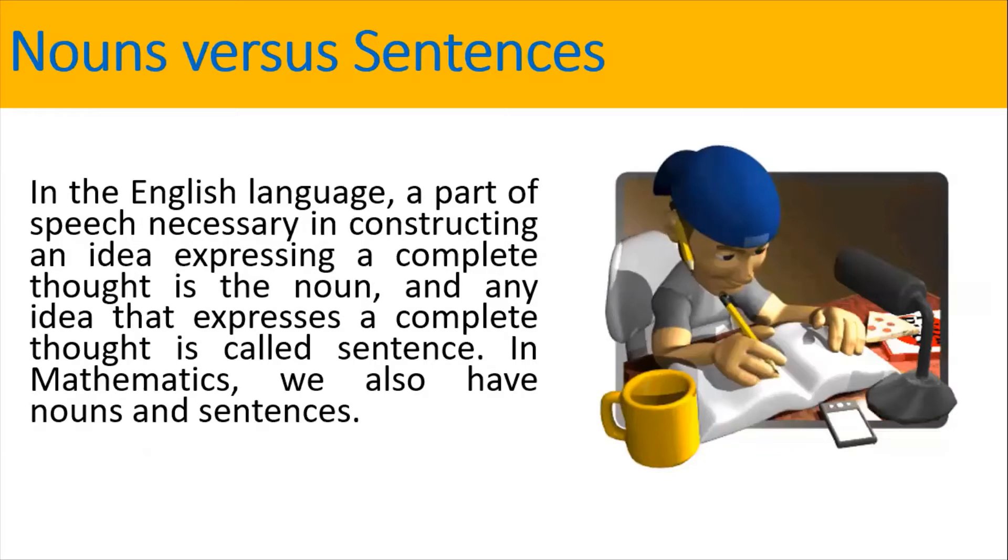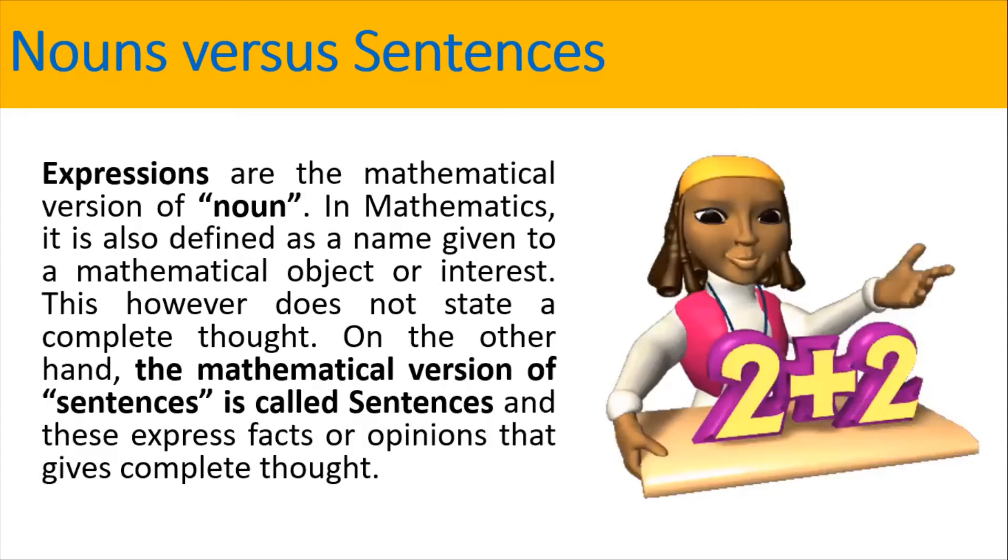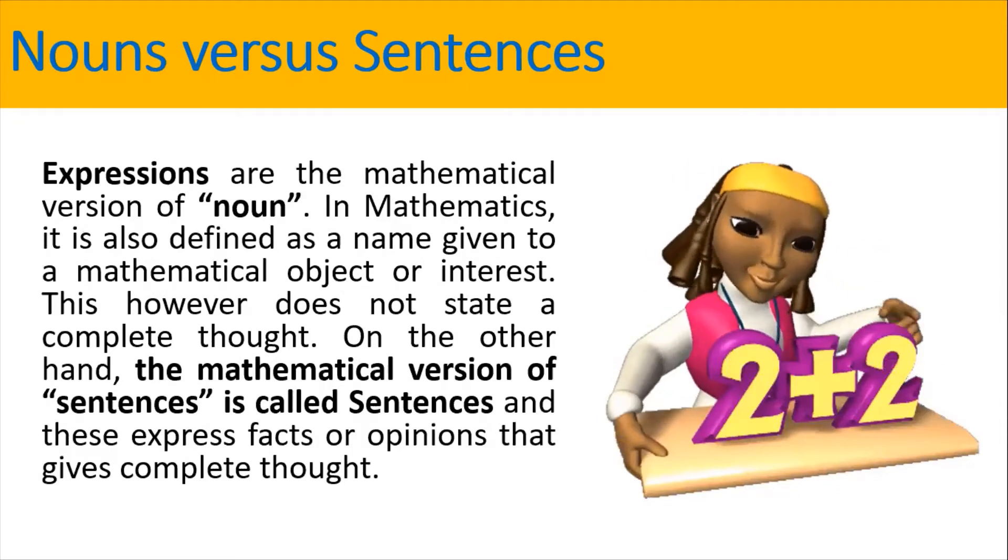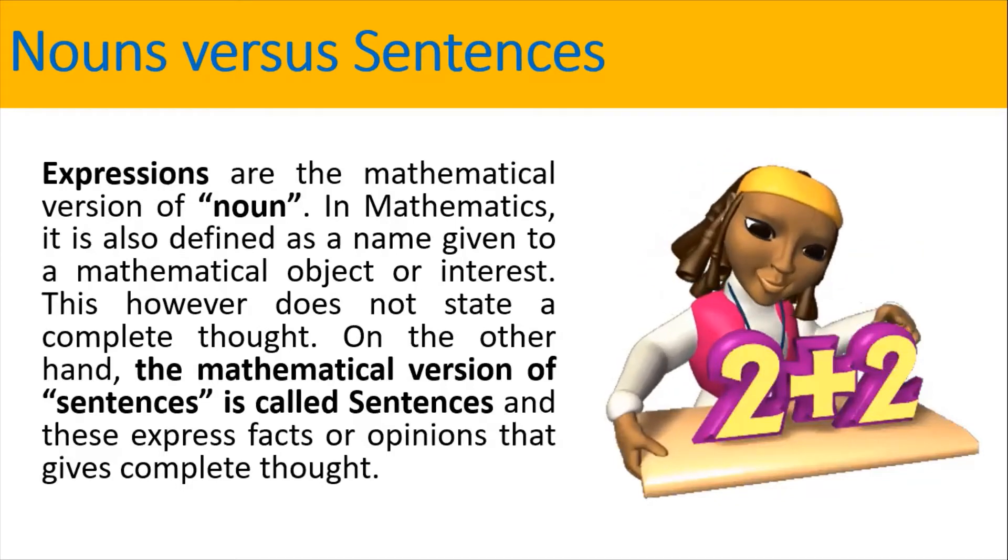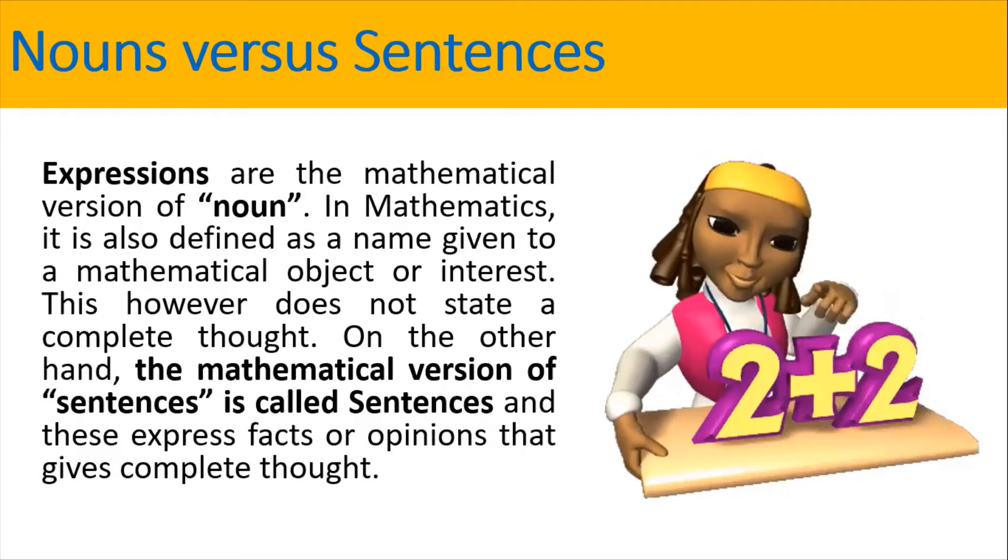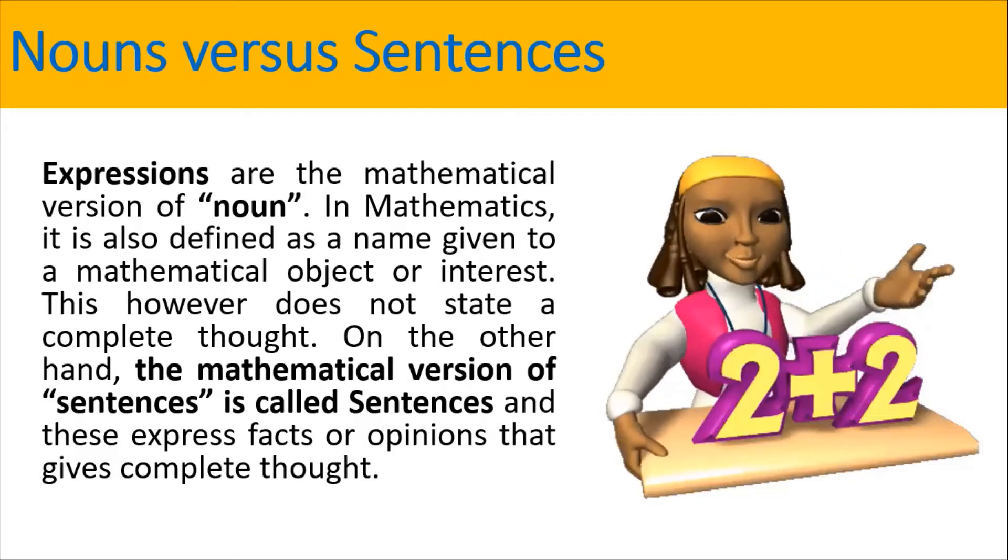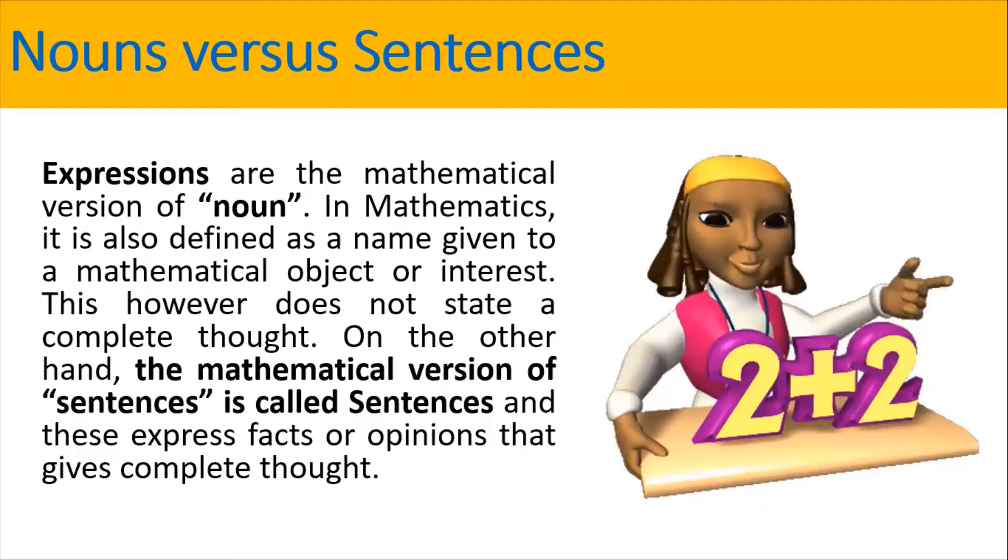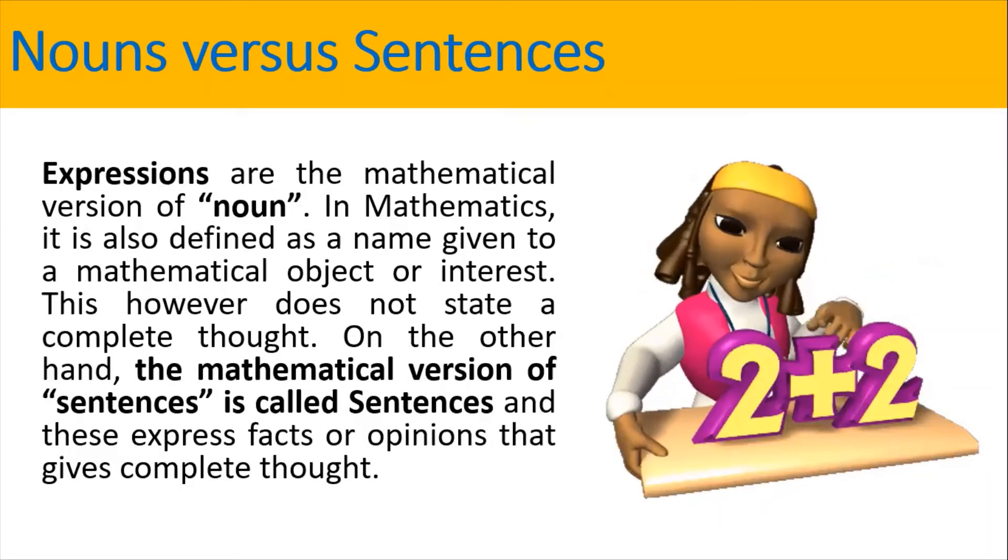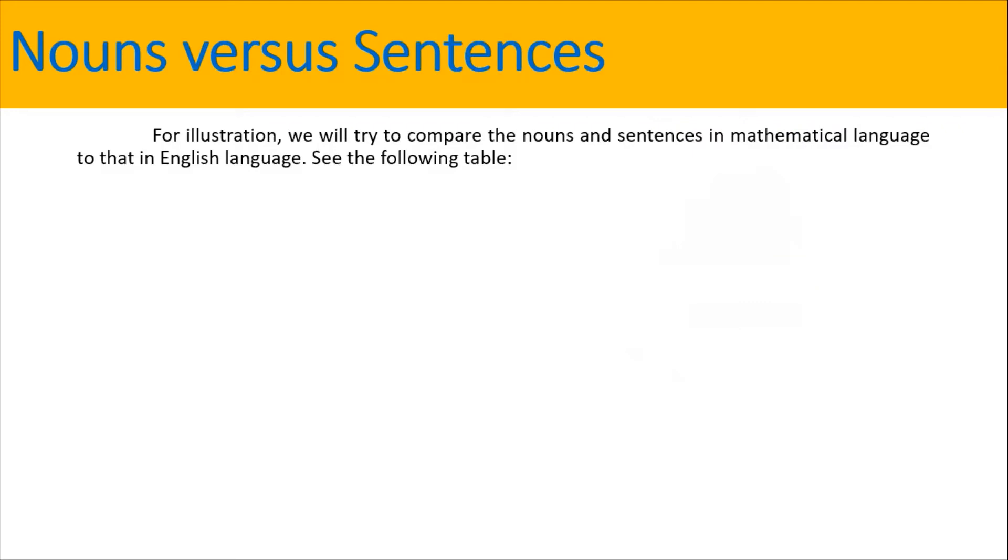In the English language, a part of speech necessarily in constructing an idea expressing a complete thought is a noun. And any idea that expresses a complete thought is called sentence. In mathematics, we also have nouns and sentences. Expressions are the mathematical version of noun. In mathematics, it is also defined as a name given to a mathematical object of interest. This, however, does not state a complete thought. On the other hand, the mathematical version of sentences is called sentences, and this express facts or opinions that gives complete thought. For illustration, we will try to compare the nouns and sentences in mathematical language to that in English language.